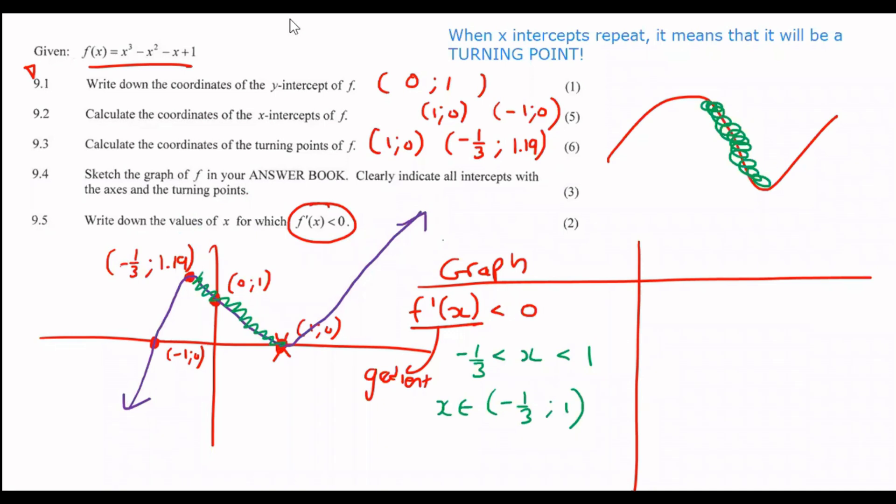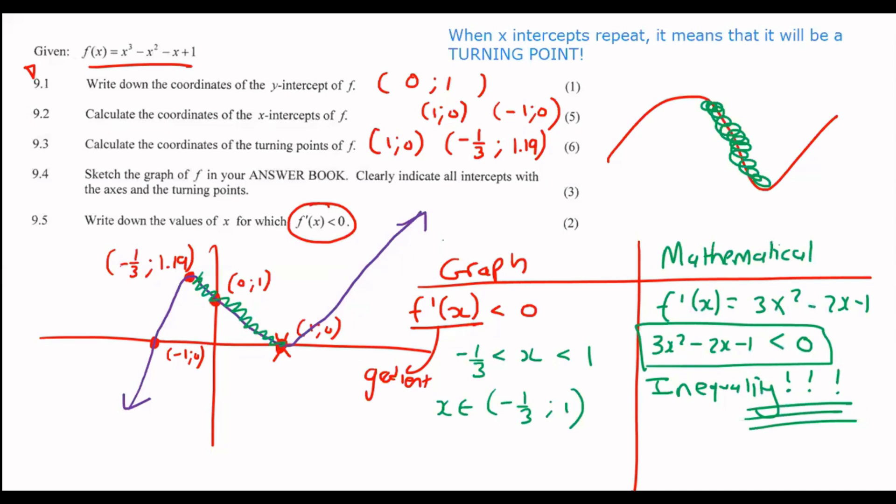For those of you that aren't very comfortable with that type of approach, then you can use more of a mathematical type of approach. You would take the first derivative. So, the first derivative was equal to 3x squared minus 2x minus 1. And you would say 3x squared minus 2x minus 1 smaller than 0. And then you would solve this like an inequality. You will get the exact same answer.